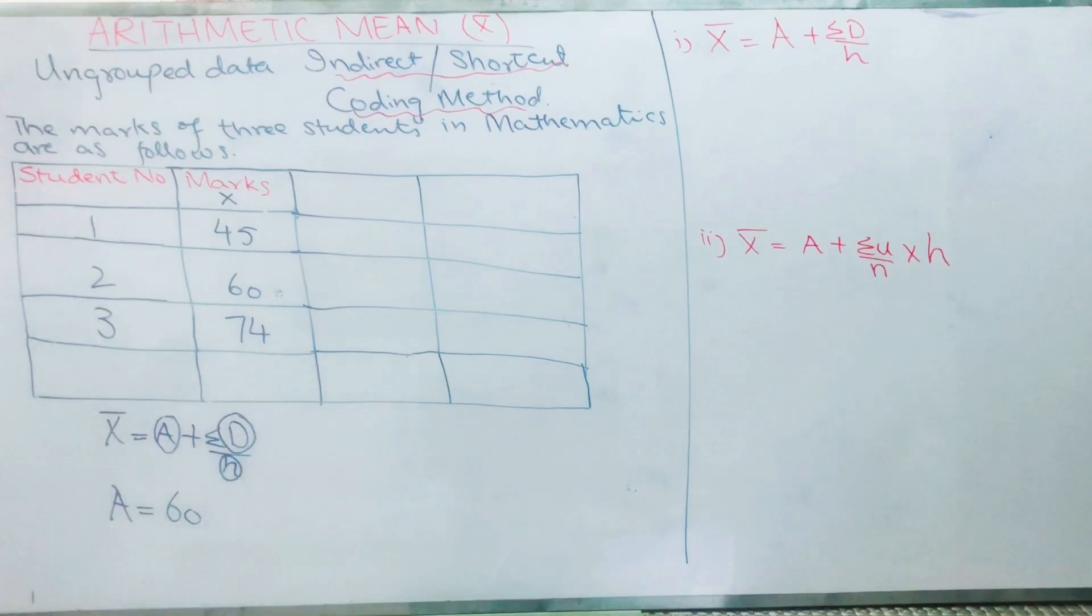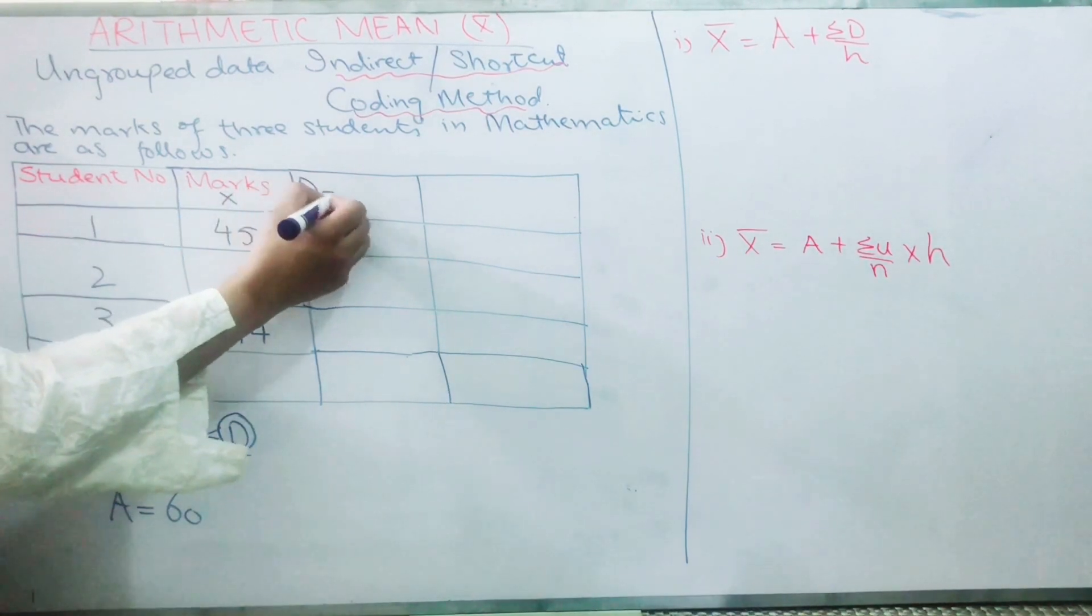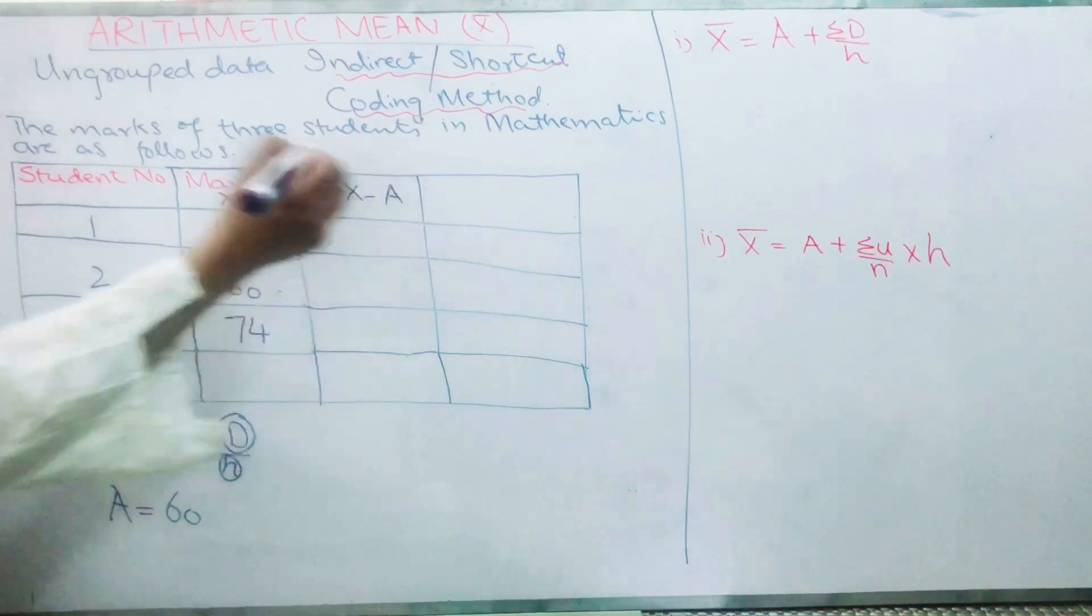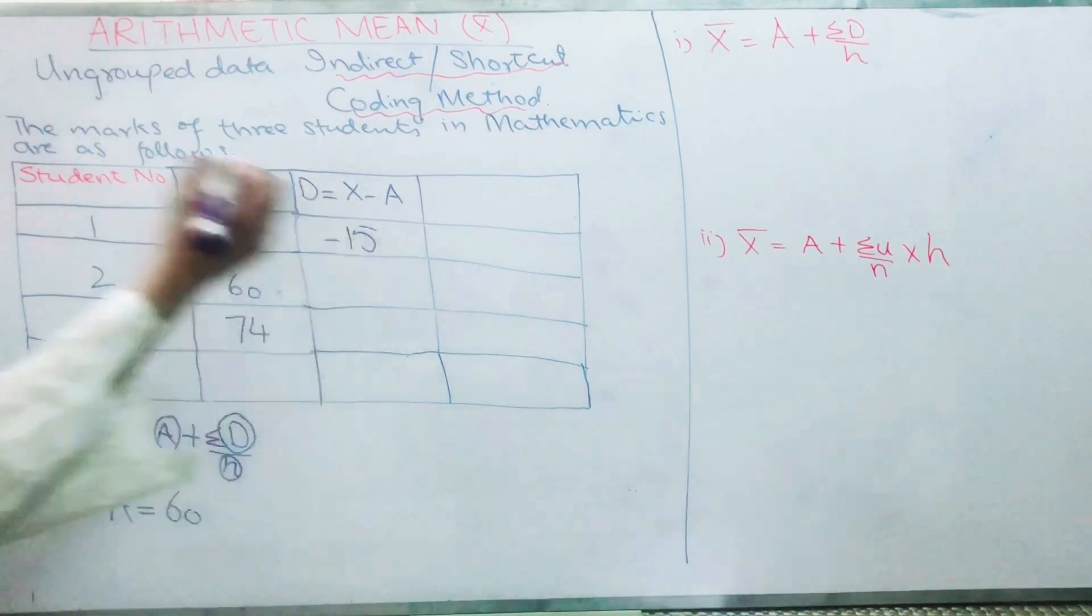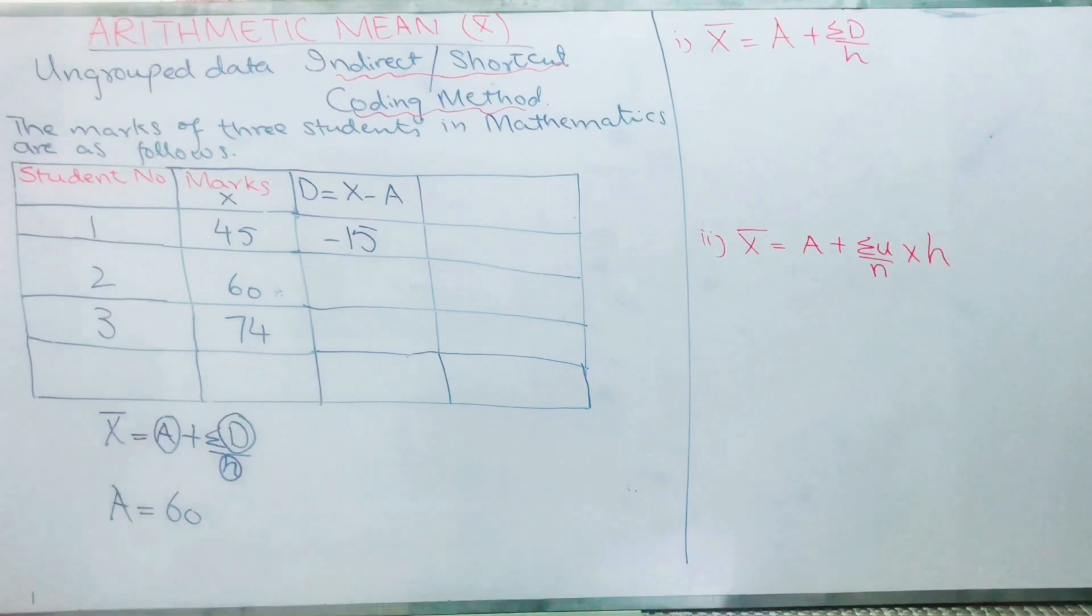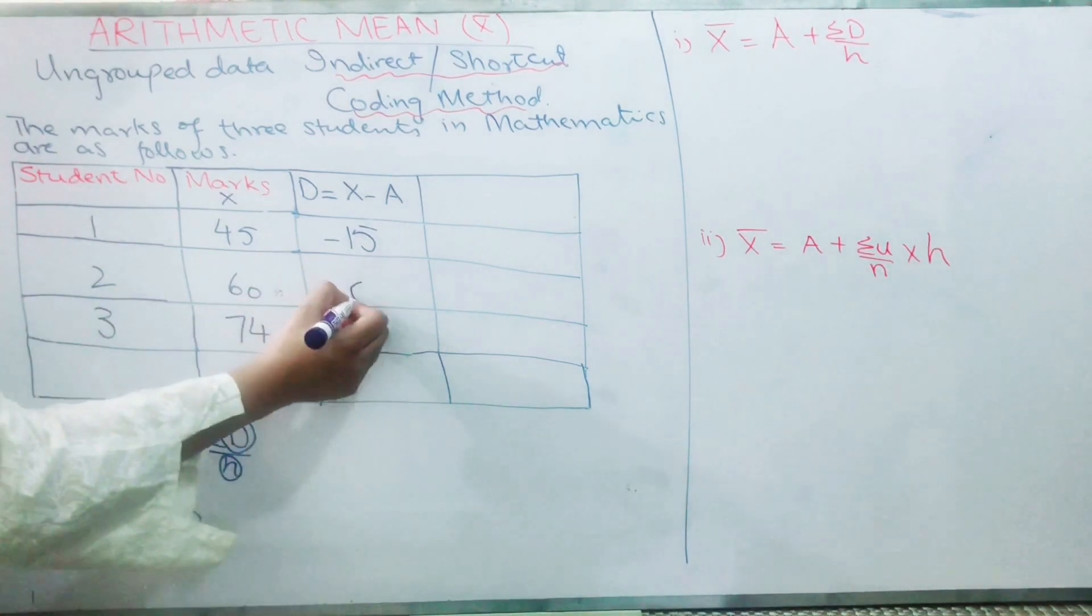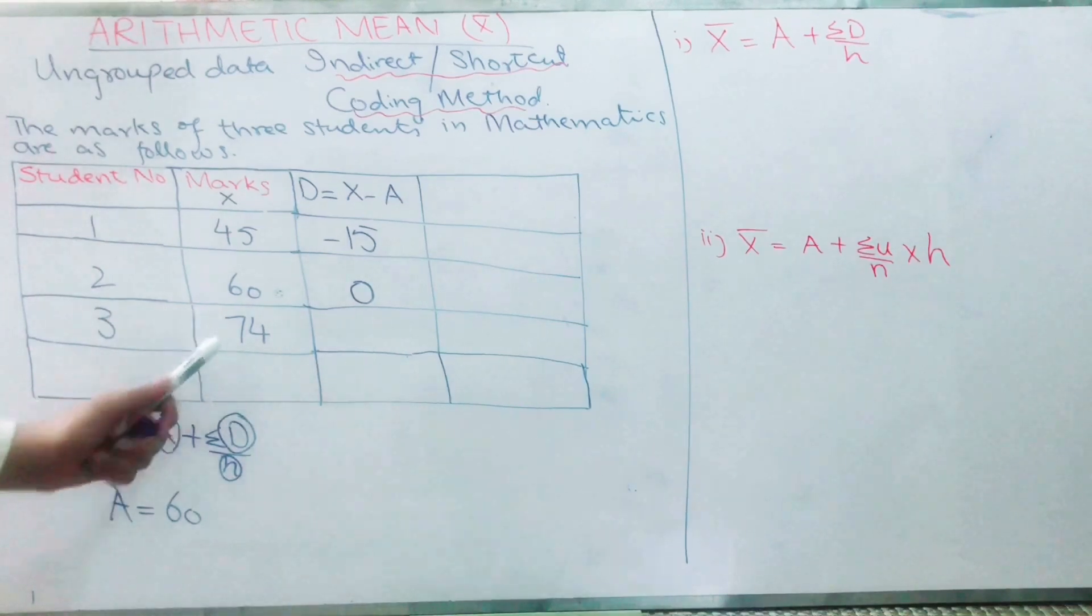Then come to next. A is 60. I have to find D. D equals the deviations, that is x - A. It means that you have to subtract 60 from each value. So the first one is when you subtract 45 from 60, you get minus 15. When you subtract 60 minus 60, you get zero. When you subtract 74 minus 60, you get 14.